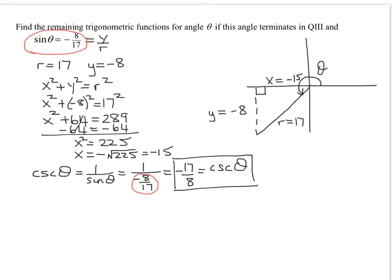Now let's find, it doesn't matter which one we find next, let's find the cosine of theta. Remember, in terms of x, y, and r, that's x over r. x is negative 15, r is 17. So I now know, here I have the cosine of theta.